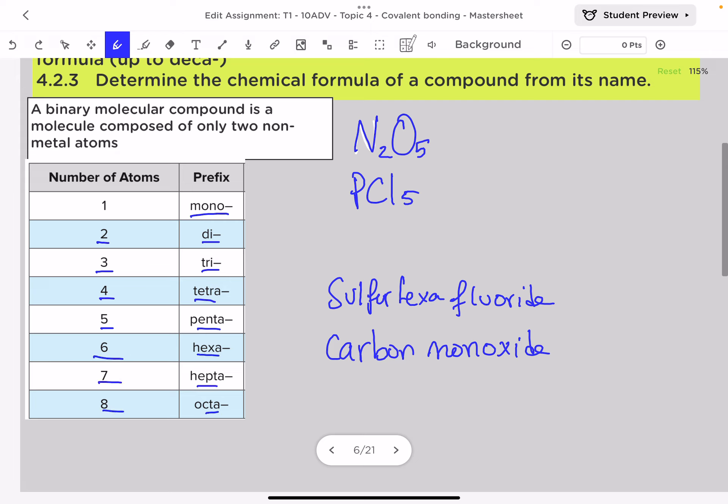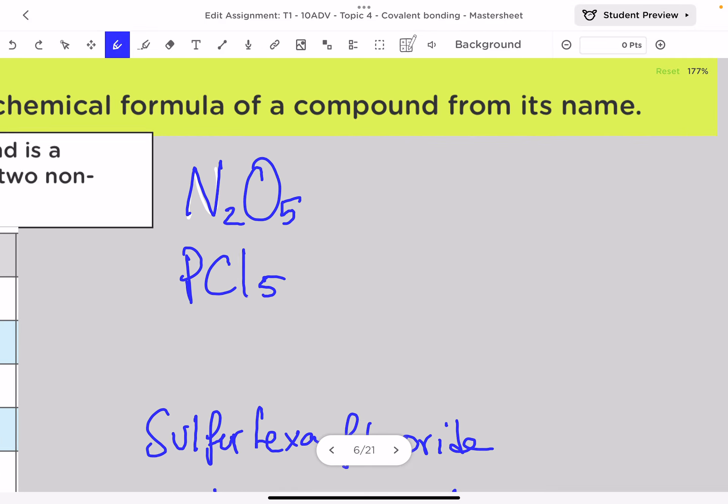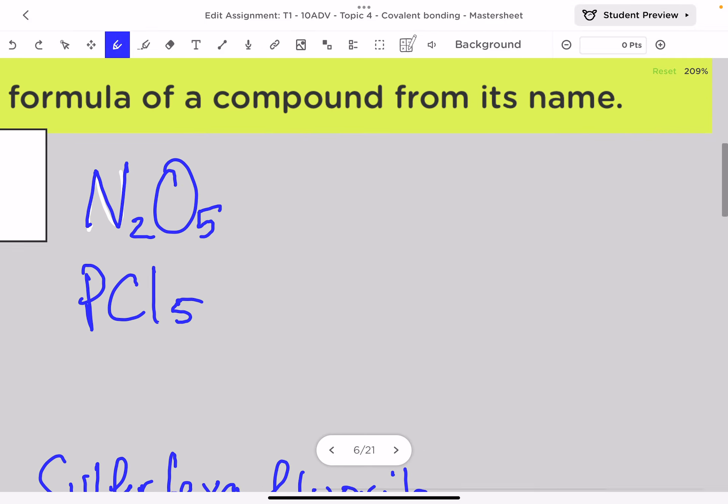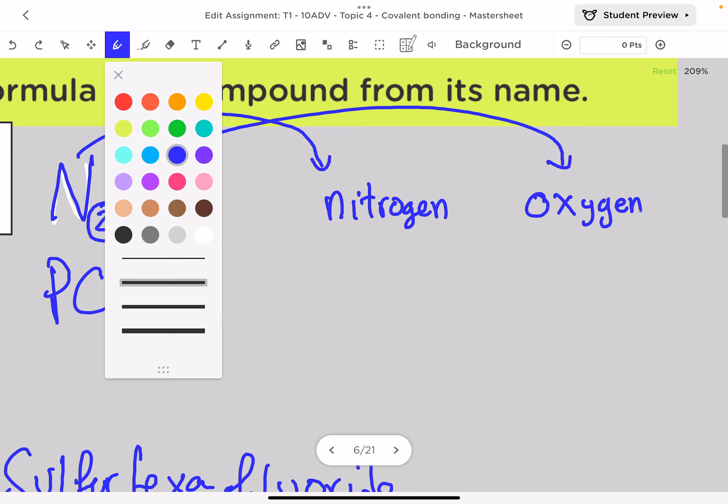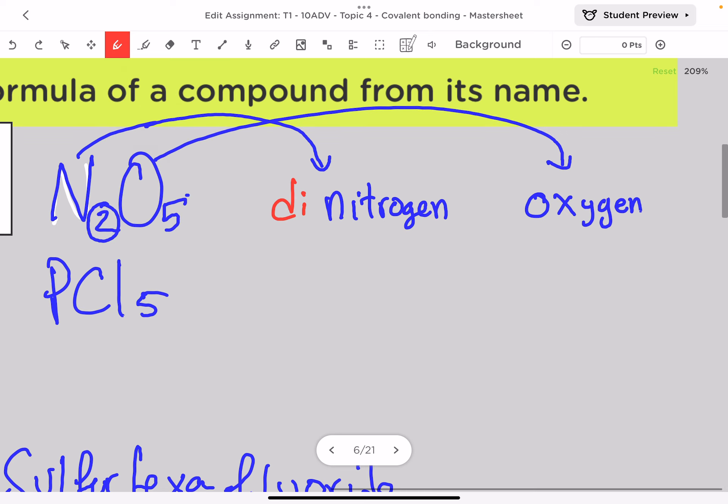Let's look at the first example, N2O5. The rule to name this compound is: first you write the name of the first atom, which is nitrogen, and then you write the name of the second atom, oxygen. You write the name of the number as a prefix, so two is di and five is penta.